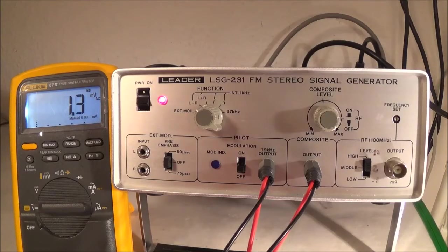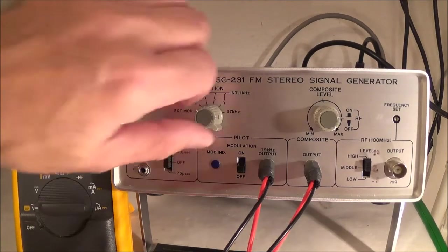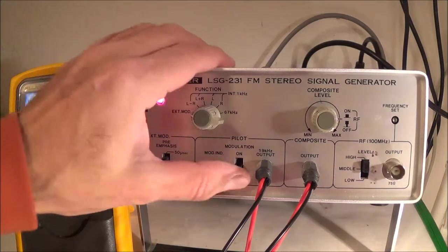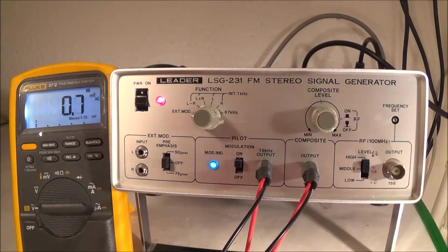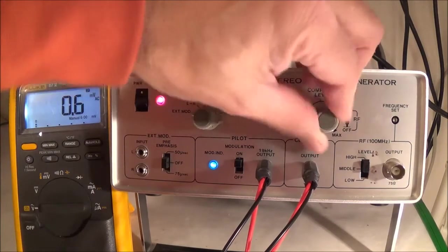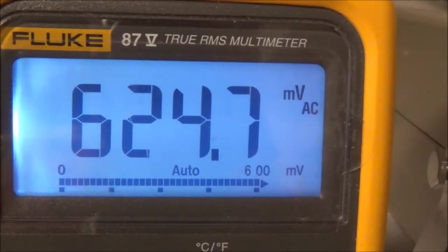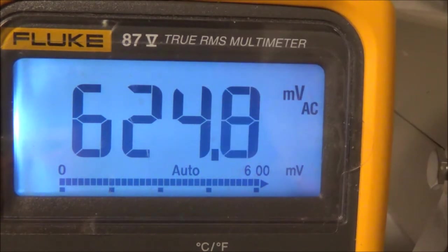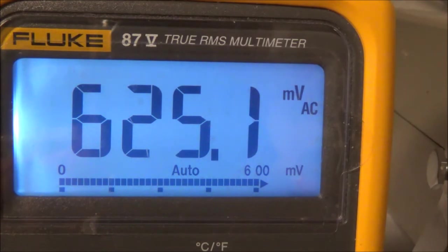Next we do the pilot level check and adjustment. We set the function switch to external modulation, pilot switch on, composite level at minimum, RF switch off. So the multimeter is now hooked up to the 19 kHz output. And I am getting a completely wrong reading. I don't think the multimeter can handle the 19 kHz frequency. So I am going to go ahead and switch to an AC analog voltmeter, which can handle high frequencies.